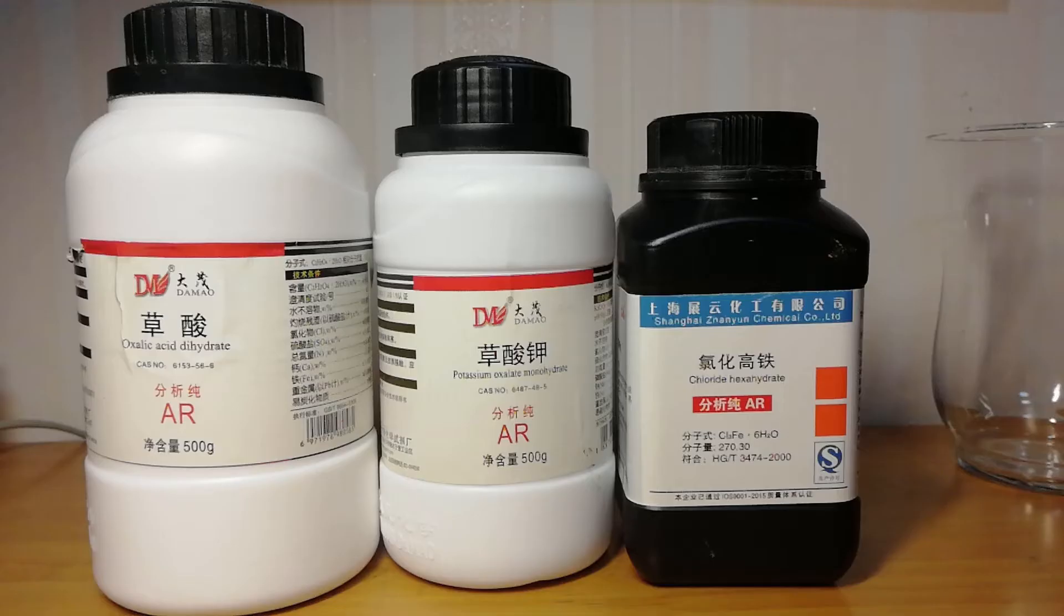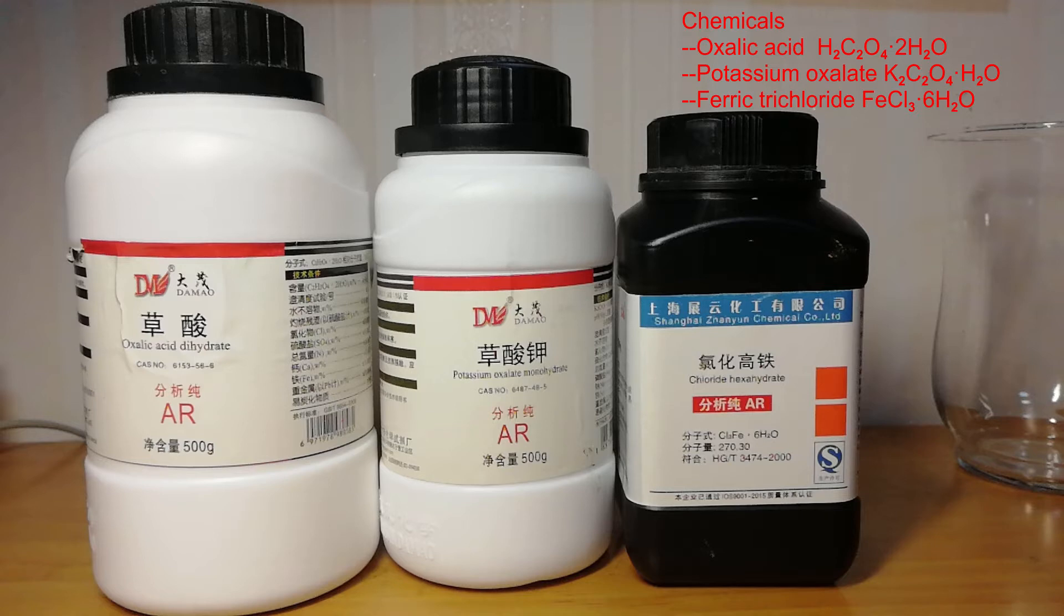The first part of the experiment is the synthesis of the chelate potassium ferric oxalate. The chelate itself is a bit complicated in terms of structure, but the synthesis is very straightforward. To get started, we need ferric trichloride, potassium oxalate, and oxalic acid.